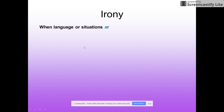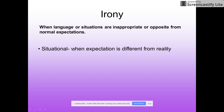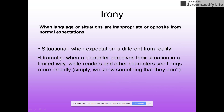Next we're going to talk about irony. In the general sense, irony is when language or situations are inappropriate or opposite from normal expectations, and there are three types. The first is situational irony — when expectation is different from reality; readers and characters expect one thing but something quite different happens. The second is dramatic irony — when a character perceives their situation in a limited way while readers and other characters see things more broadly. Simply put, it's when we know something that the characters don't — like in a horror movie when you know the serial killer is in the closet but the character doesn't.